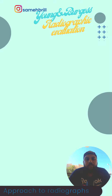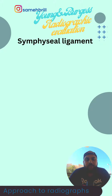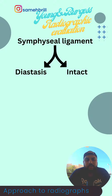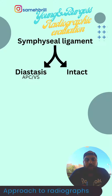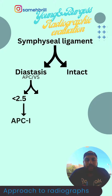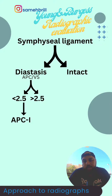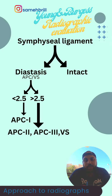I start my approach with the symphysial ligaments or symphysial diastasis. If there is disruption of the symphysial ligaments, that might be an APC fracture or even a vertical shear. If the diastasis is less than 2.5 cm, that will be an APC1. If the diastasis is more than 2.5 cm, that might be an APC2, an APC3, or a VS.